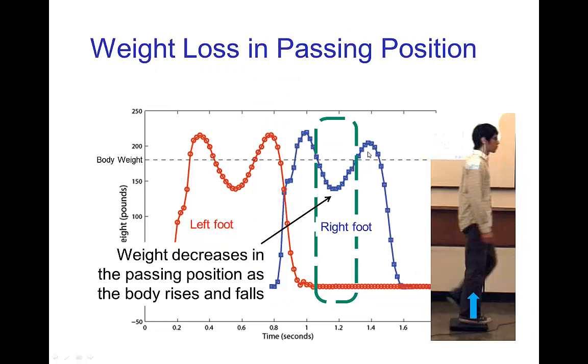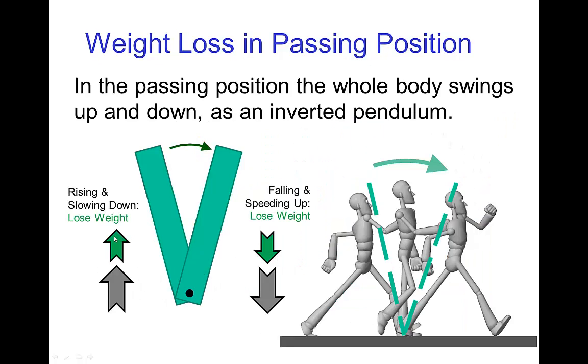The dip that occurs in weight is during the passing position. Here we see this very significant drop in the weight when only the right foot is on the plate and the other foot is passing under the torso. This is less weight than if the person was just standing on the plate, standing on one leg. This weight loss occurs because as you're walking and going through the passing position, the body is rising and slowing down and then falling and speeding up. This swinging motion actually produces a weight loss which we saw in that dip in the force plate measurement.